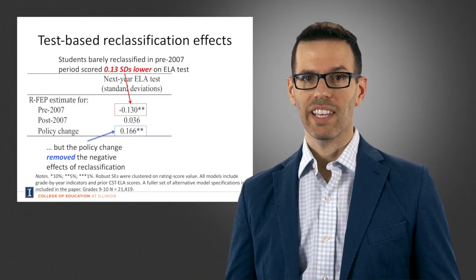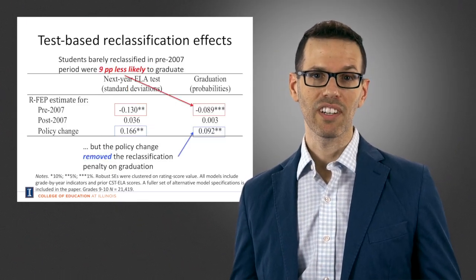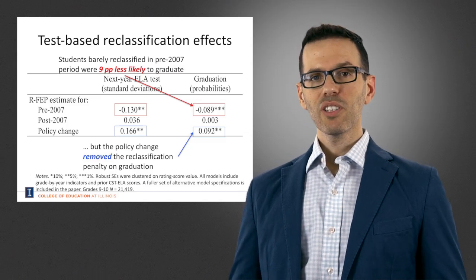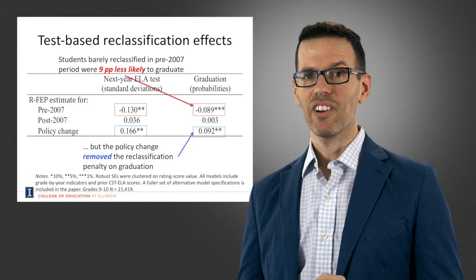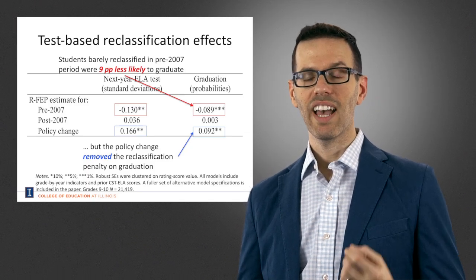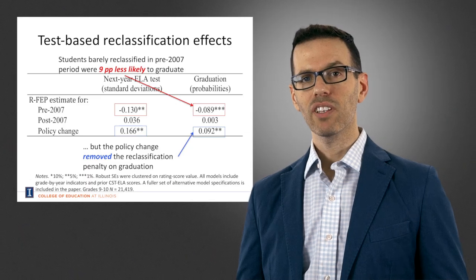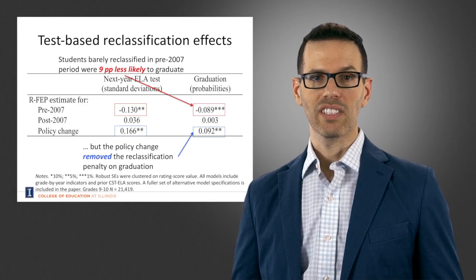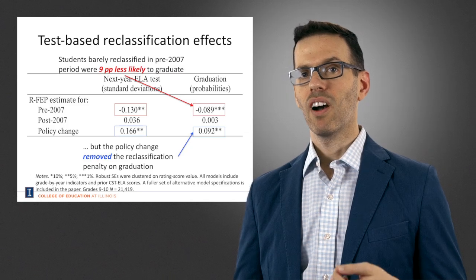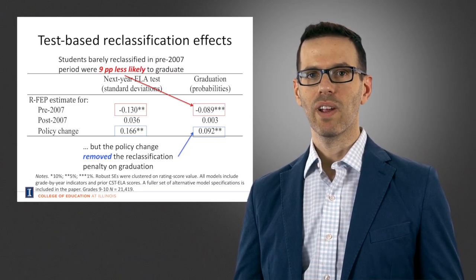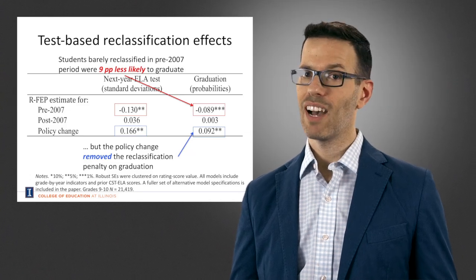But there's other outcomes we could look at. We might be interested in graduation effects, graduation outcomes for example. Now these are probabilities and what we see is that in the pre-2007 period when the test was not as difficult to pass, there was a negative effect of reclassification on graduation, such that students who were just barely reclassified are graduating at rates that are 9 percentage points lower than students who are just barely not reclassified.